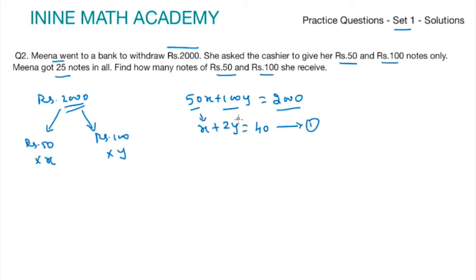Since there are two variables x and y, we need two equations to solve it. How to get the second equation? We know Meena got 25 notes, that is x notes of rupees 50 and y notes of rupees 100. When we add we get 25 total number of notes. We get x notes plus y notes equal to 25. Let us call this equation 2.